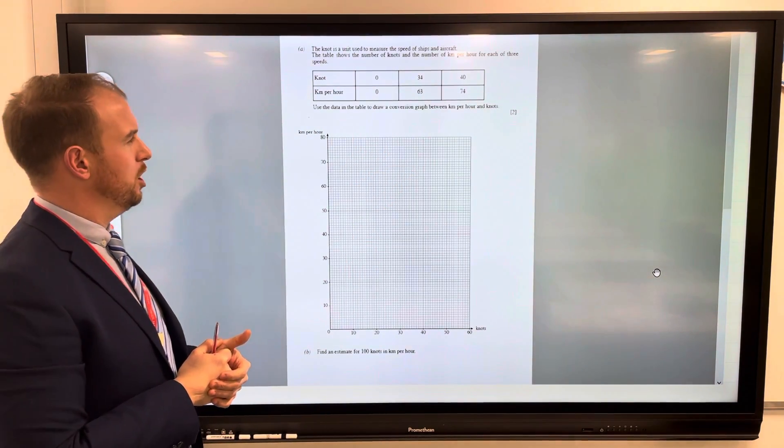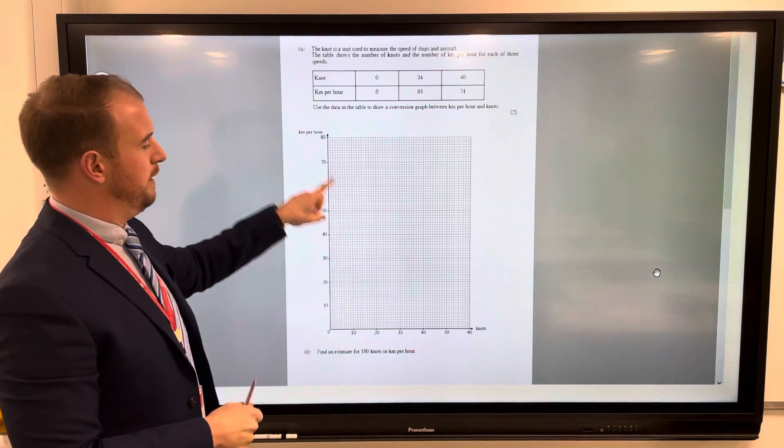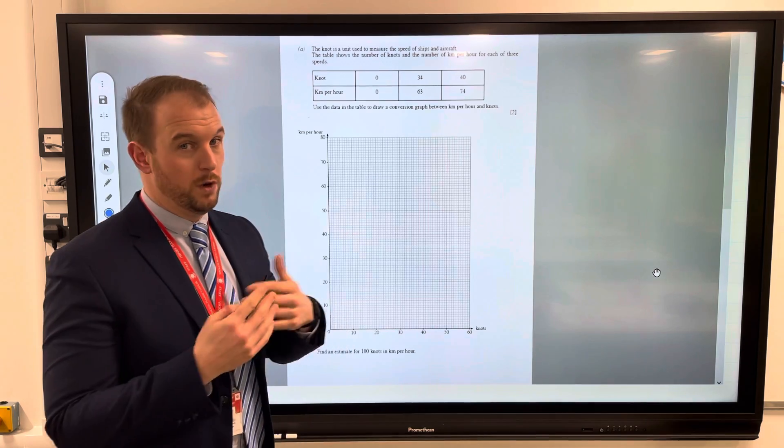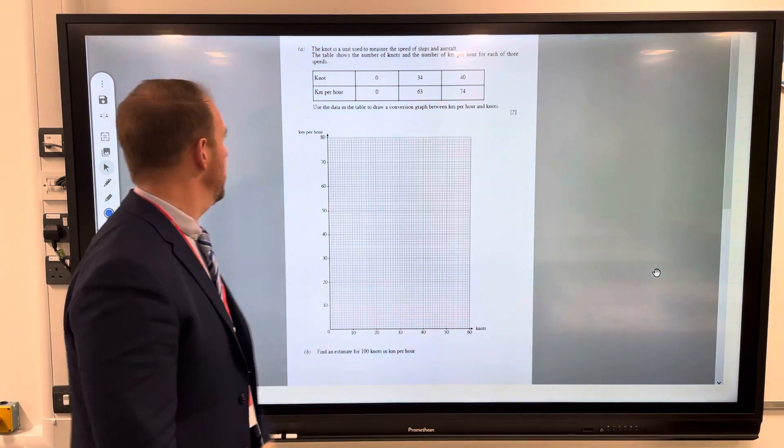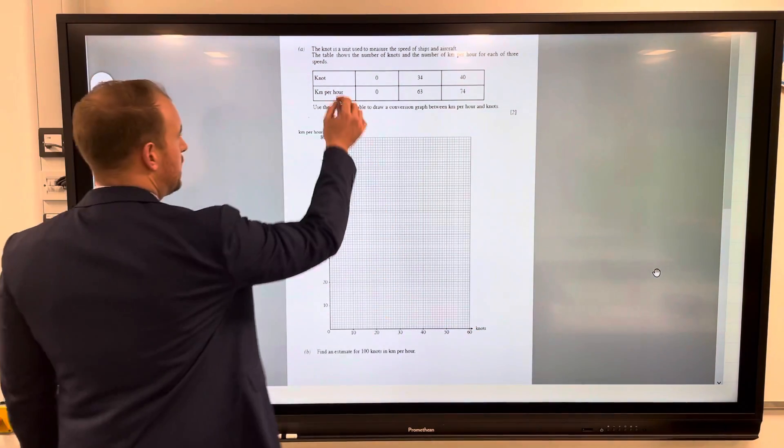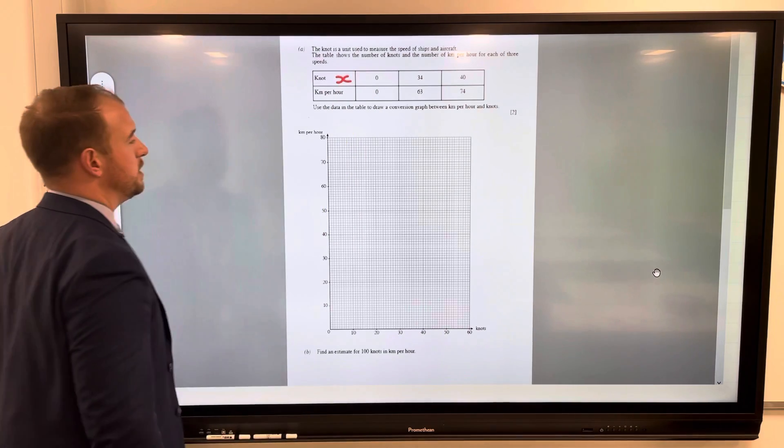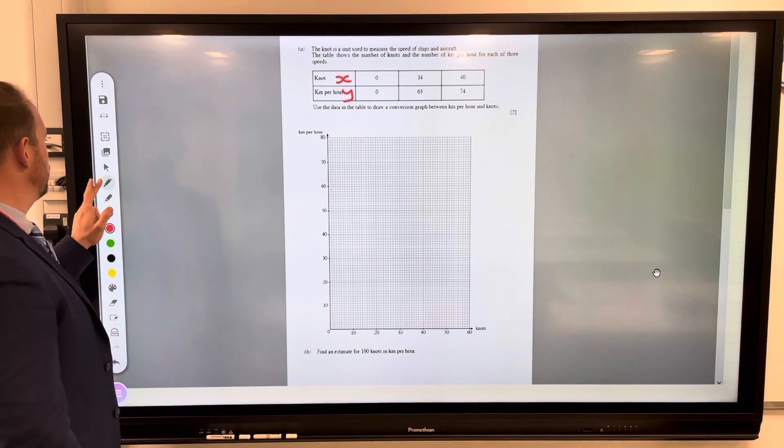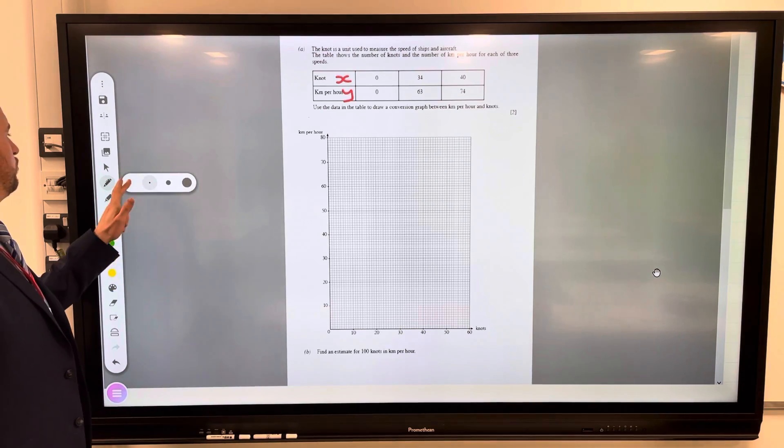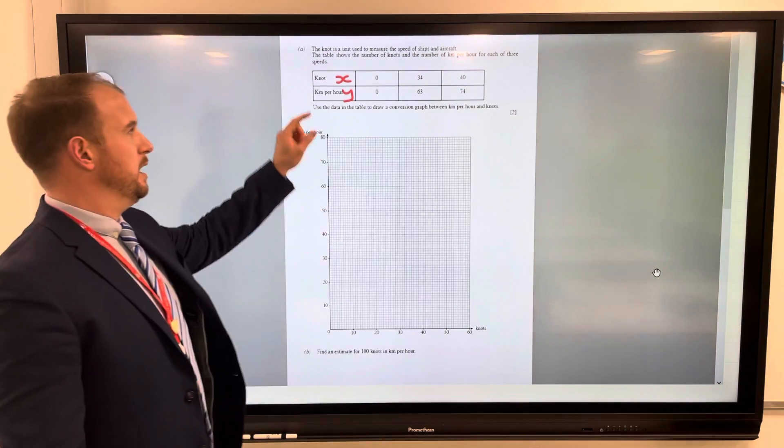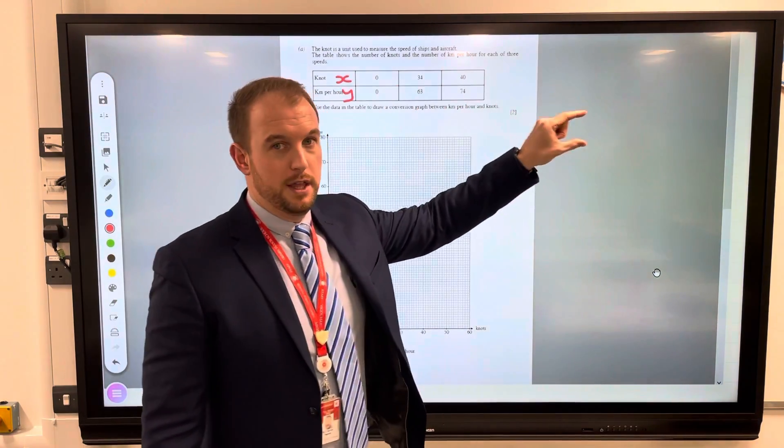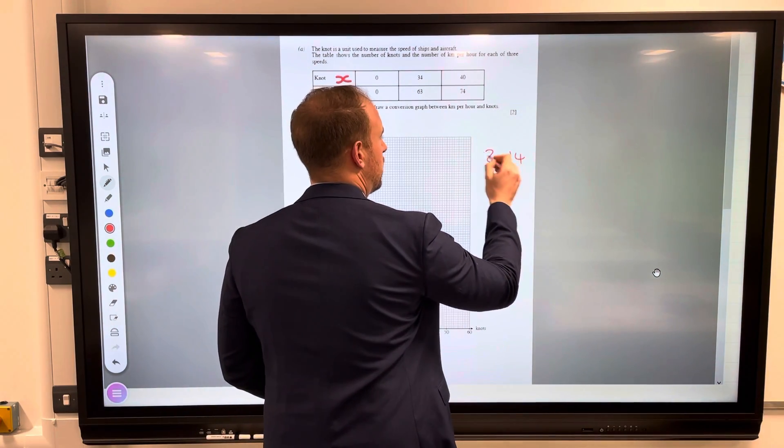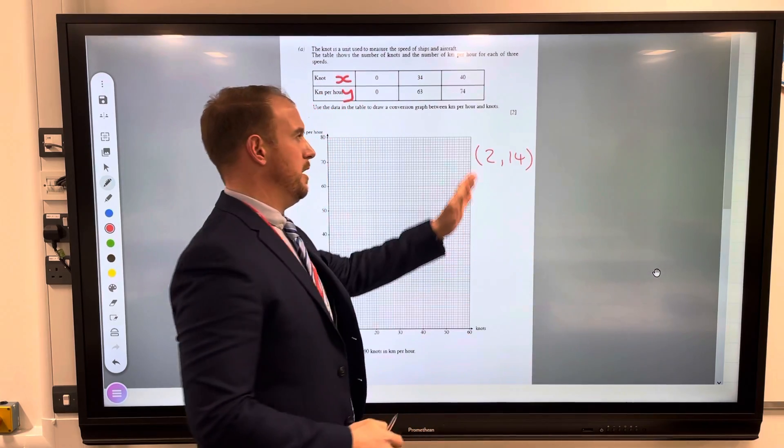Between kilometers per hour and knots. You will see they have given you a graph, they have labeled the axes for you which makes life a lot easier. You can see here the x-axis is the knots and the kilometers per hour is the y. Now if you've done straight line graphs before or quadratic graphs you'll notice and be quite familiar with this table here.